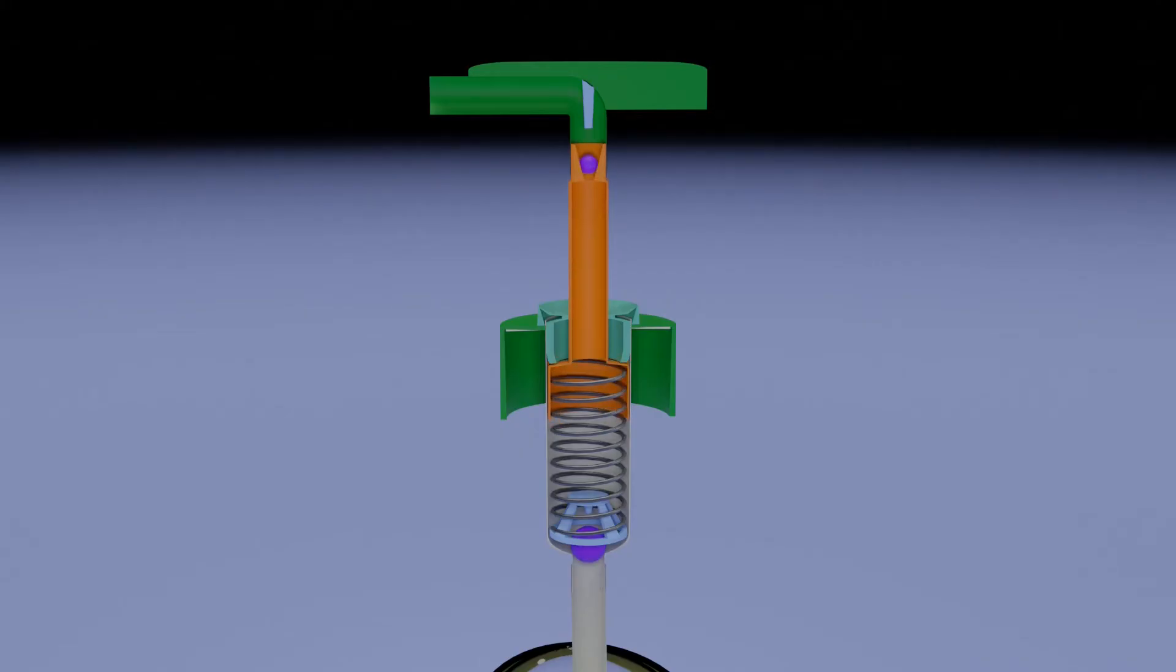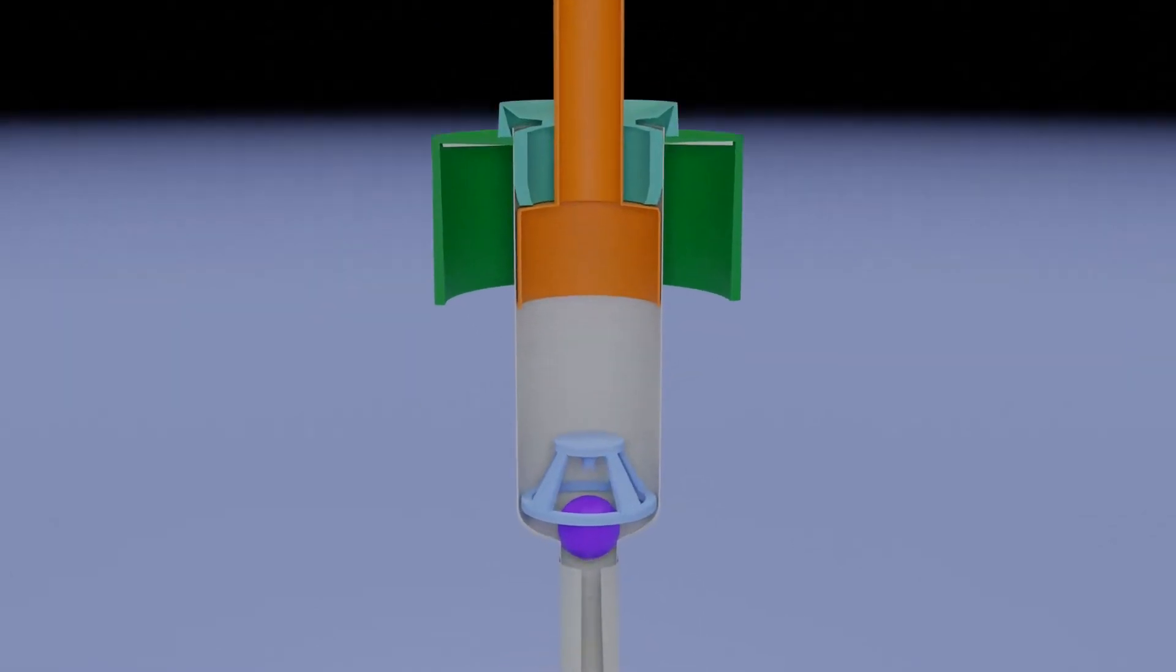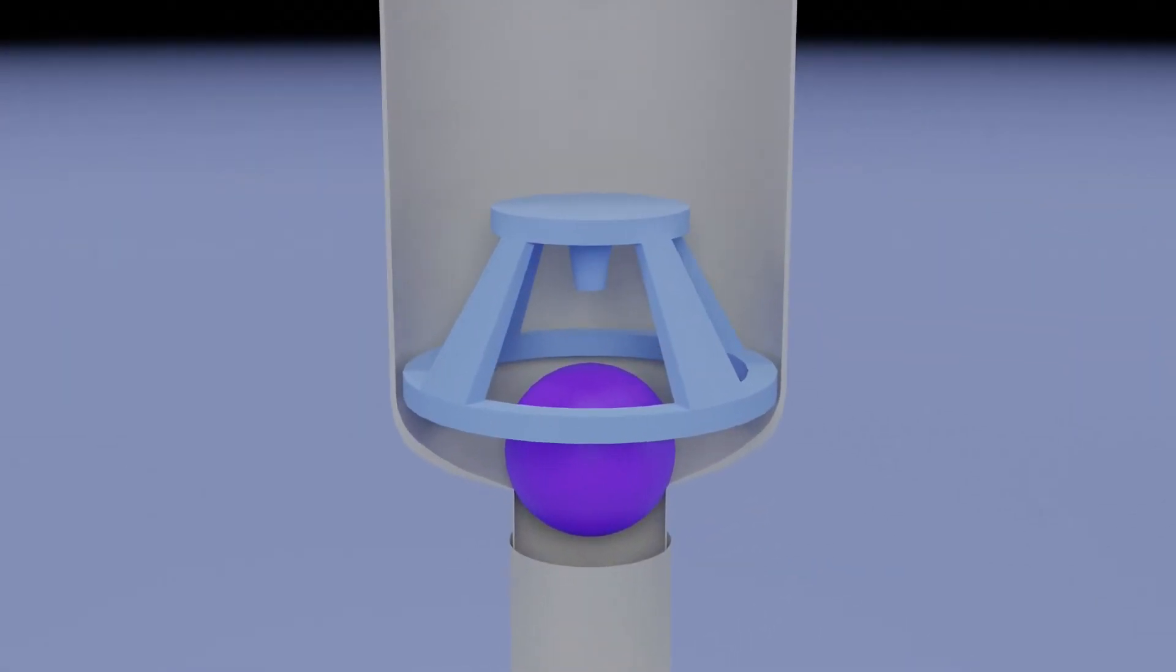The two balls at the top and bottom of the chamber act as one-way valves. When the lower ball is in rested position, it seals the chamber and prevents the liquid in the chamber from falling into the main container.